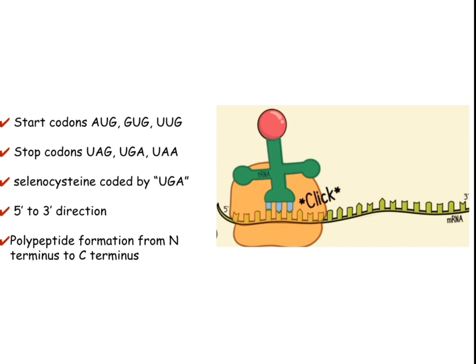For the translation process we should have some start codon and some stop codon. The start codons are AUG, GUG, and UUG. In 90 percent of cases the cell uses AUG as the start codon; in 9 percent of cases the cell uses GUG; and UUG is used in about 1 percent of organisms. The stop codons are UAG, UGA, and UAA.